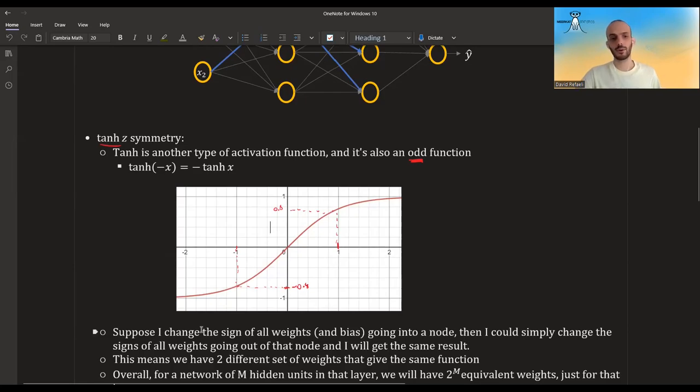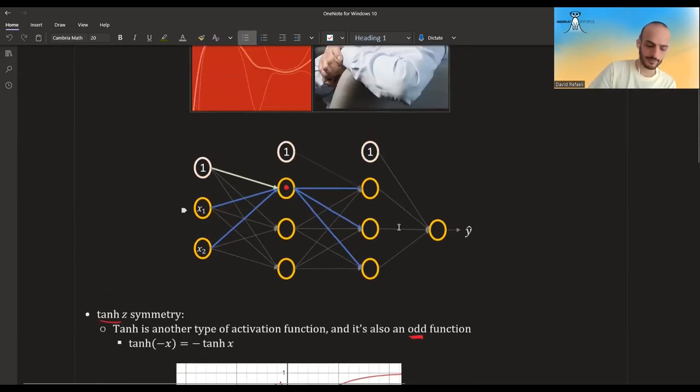And now suppose I change the sign of all the weights and also the bias going into the node. So let's say I had some b1, w1, w2, and instead of taking them, I will take minus b1, minus w1, minus w2. So what I will get is instead of z1, I will get minus z1.